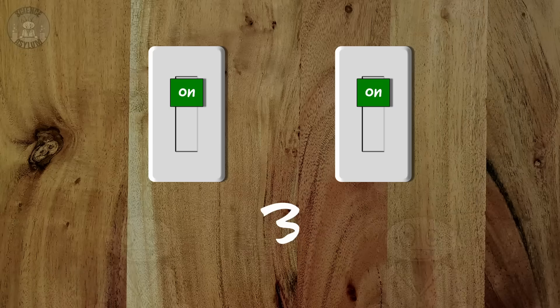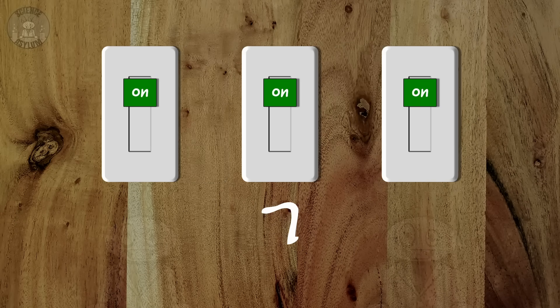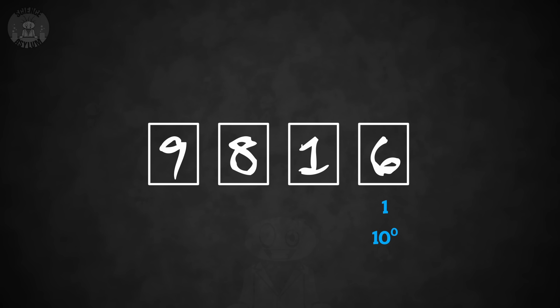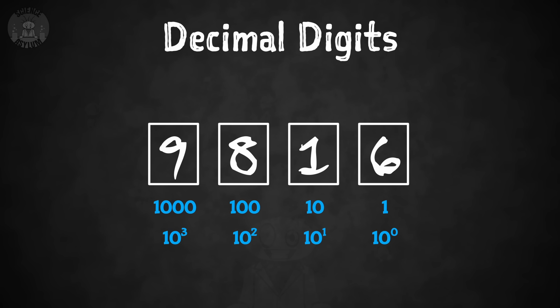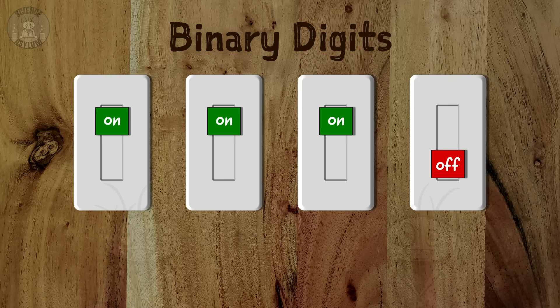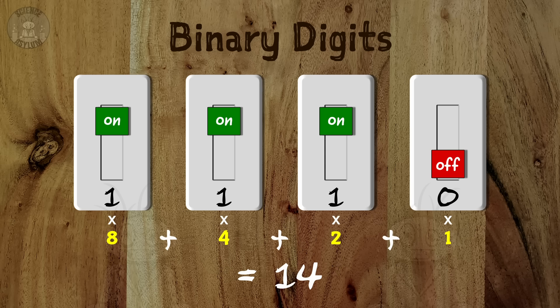If we want bigger numbers, we're going to need more switches. Two switches allows for numbers up to three. Three switches allows for numbers up to seven. Four switches up to fifteen. This is binary. You know how normal numbers have a ones place, a tens place, a hundreds place, and so on? Those are decimal digits. Each of these switches represents a digit, but in binary instead of decimal. There's a ones place, a twos place, a fours place, and so on. That makes this number here equal to fourteen.